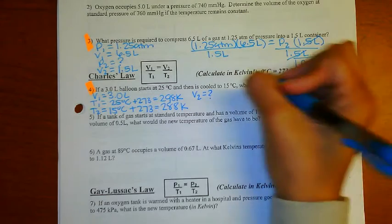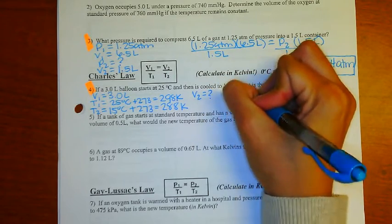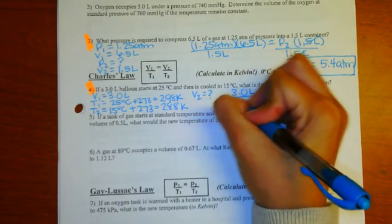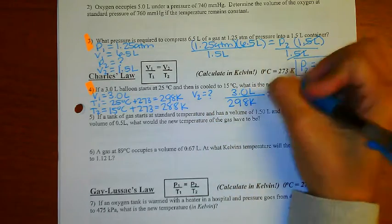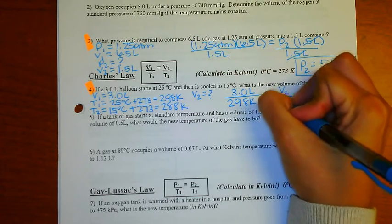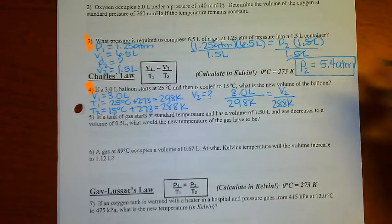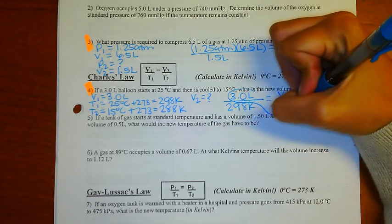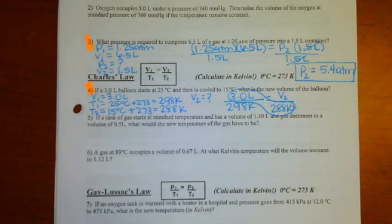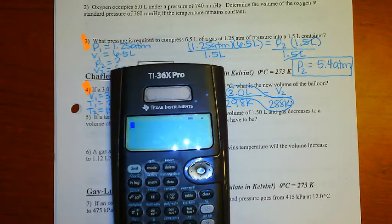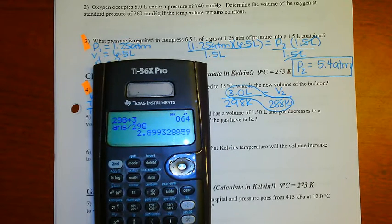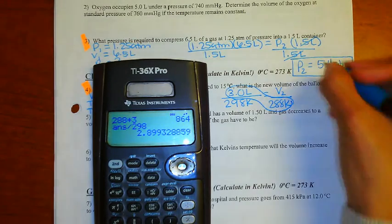I can go ahead and plug this into our formula: V1 divided by T1 is equal to V2 divided by T2. All you have to do then is just cross multiply. So 288 times 3 divided by 298, and my V2 is then equal to 2.89 liters.